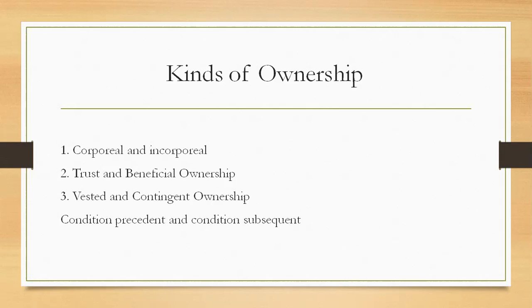Insofar as vested interest is concerned, an interest is said to be vested when it is not subject to any condition precedent, or when it is to take effect on the happening of an event which is certain. A person takes a vested interest in property when he acquires a property right in it, but the right of enjoyment is only deferred until a future event that is certain to happen. So if a Hindu widow adopts a son but there is an agreement postponing the son's estate during the widow's lifetime, the interest created in favor of the adopted son is a vested right. It does not depend upon any condition precedent. The adopted son has a present property right in the estate, with possession and enjoyment deferred. Therefore, he can transfer the property even during the widow's lifetime.